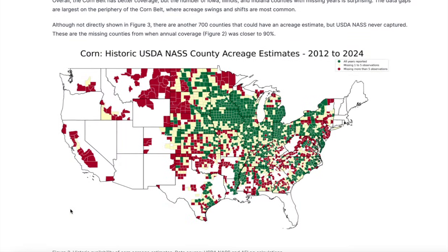We talked about this in the article — I encourage you to read it. This chart covers the period between 2012 and 2024. The green counties are those with a complete data set, meaning all years of data are available. The yellow counties are missing between one and five observations, so data users can probably still find the trends and general patterns in those regions. But you can tell there are big holes — in South Dakota, in Kansas, in parts of Missouri. Missouri is probably the surprise, since it has a lot of corn acres, yet we have big holes there. And then, of course, the red counties are those missing more than five years of data.